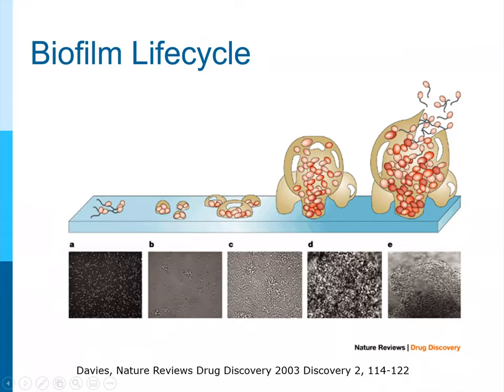These biofilms are antibiotic resistant for multiple reasons. Most importantly, bacteria deep within the biofilm undergo a large metabolic shift — they're no longer growing and dividing rapidly, making any antibiotic less effective. The biofilm also protects bacteria from the host immune system: phagocytes cannot get in and clear them. Additionally, horizontal gene transfer can happen very quickly within biofilms because bacteria are so close together, allowing antibiotic resistance to spread rapidly within the colony.